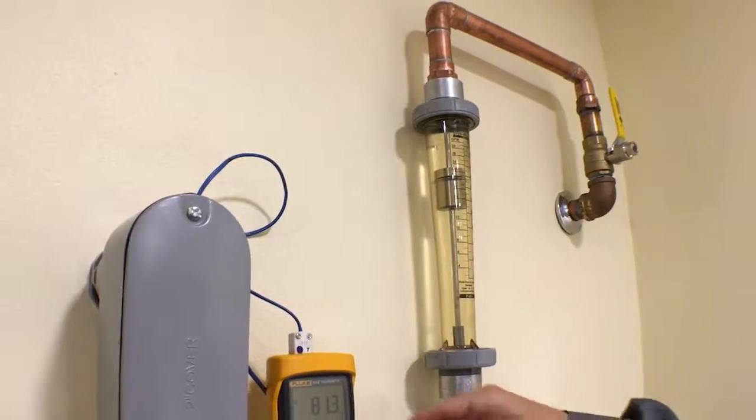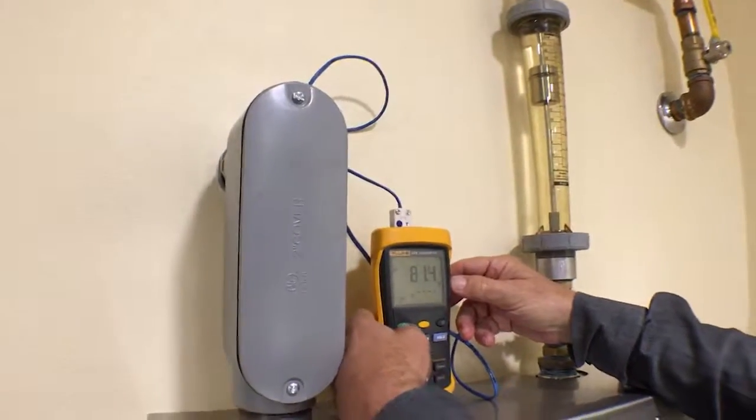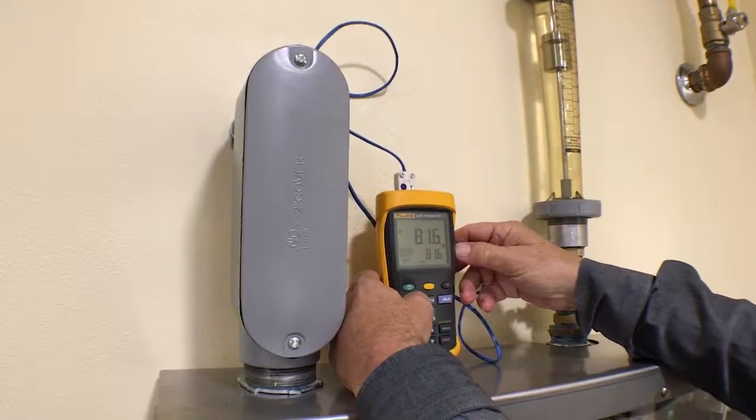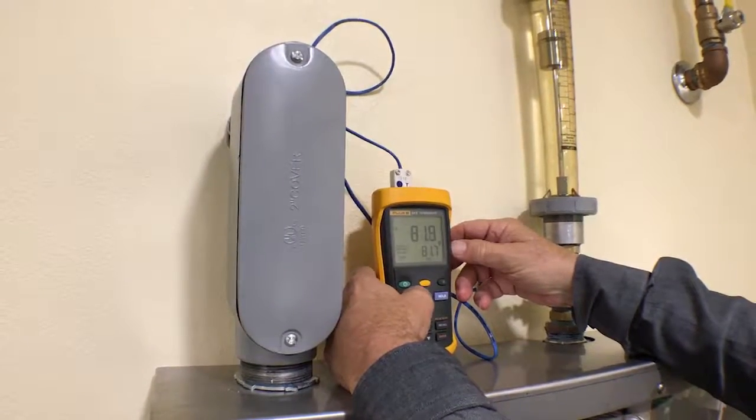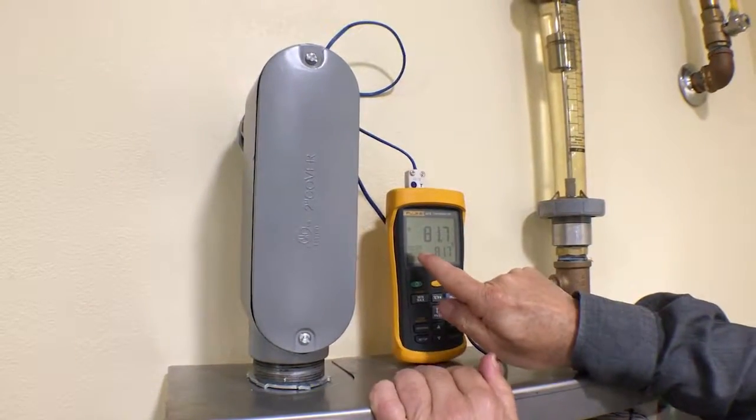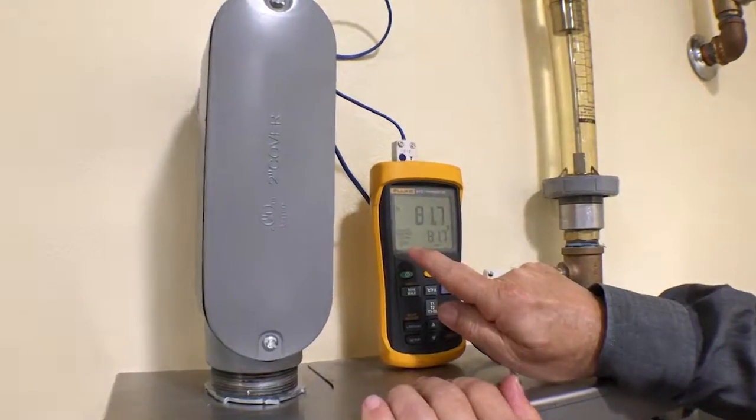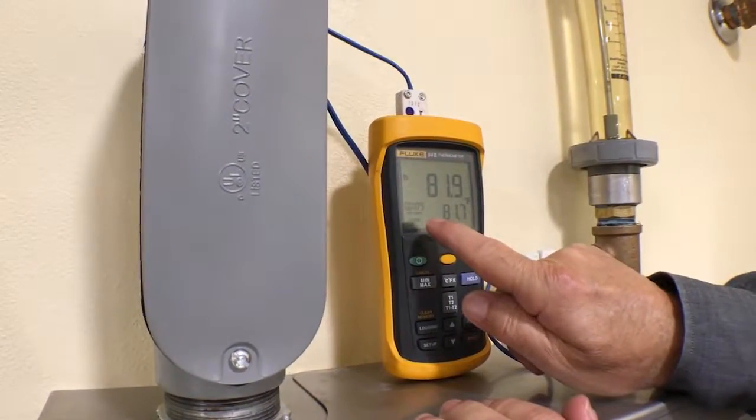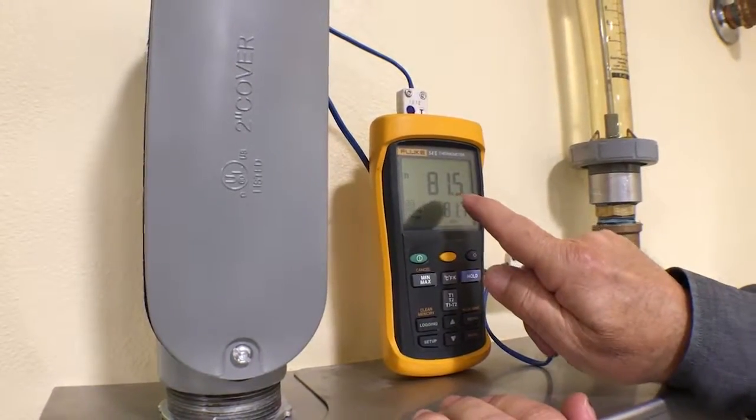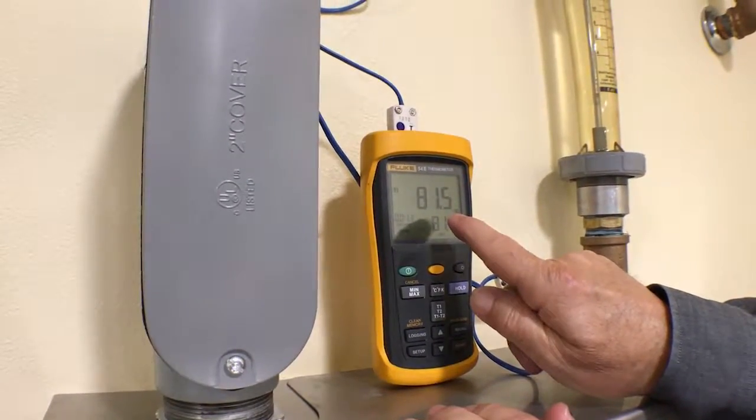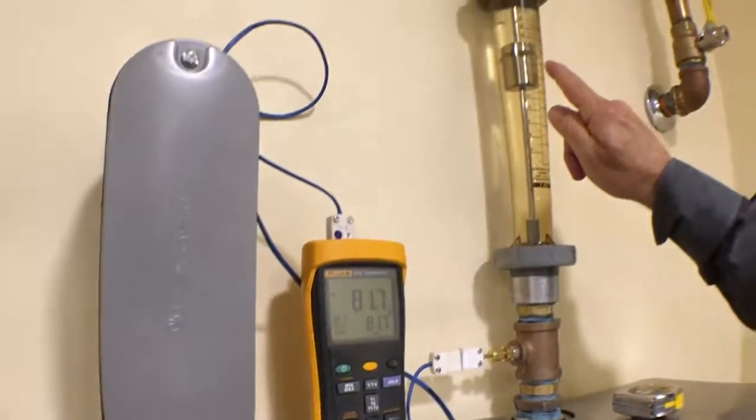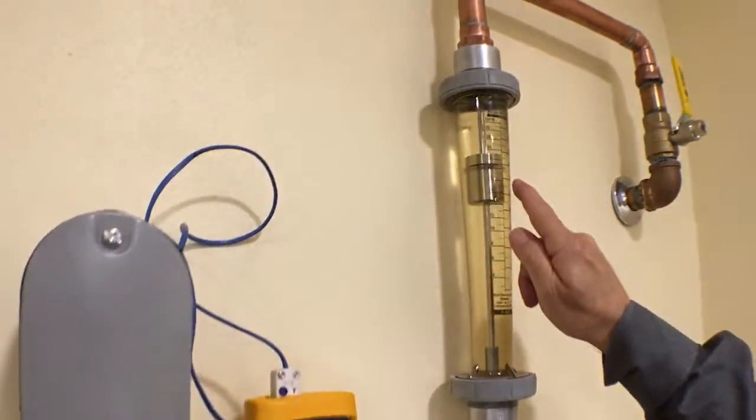Now I'm going to set the timer. Even though it's been on for a few minutes, we just activated the timer. Now you see the temperature is almost 82 degrees. The flow rate is 20 gallons per minute.